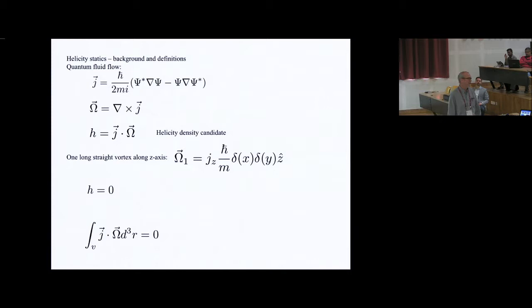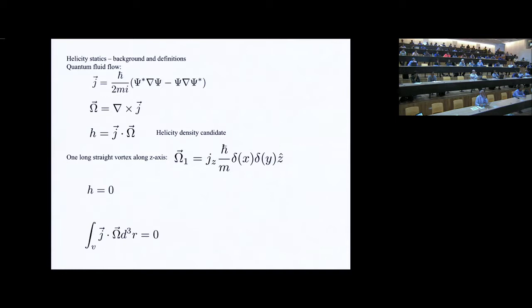Unfortunately, the curl of the momentum flux for a quantized vortex has a delta function on the core. All the rotation is confined to the core of the quantized vortex. When we go to take this dot product, because J is actually zero on the core, that is identically zero everywhere in the quantum fluid. I have to warn you that the entire rest of my talk is going to be a glorified study of zero, teased apart in various ways.